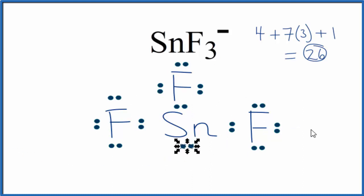Now the tin, that has an octet as well. So we have octets for each one of the atoms here. This is the Lewis structure for SnF3-.